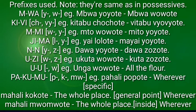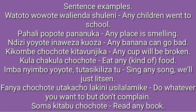The Pa-ku-mu class uses 'pa,' 'ku,' and 'mu.' Pahali popote means 'wherever' or 'any place.' Mahali kokote means 'the whole place' or 'wherever.' Mahali muomote — this one is rarely used — means 'the whole place inside' or 'wherever inside.'